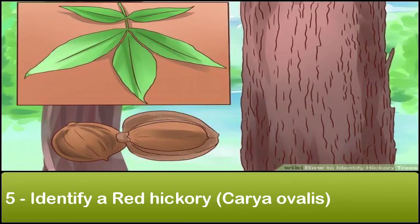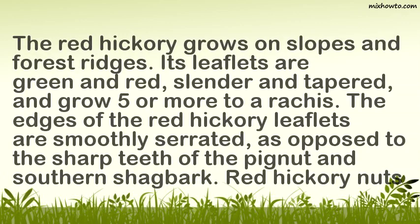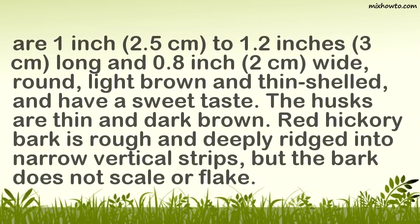Step 5: Identify a Red Hickory (Carya ovalis). The red hickory grows on slopes and forest ridges. Its leaflets are green and red, slender and tapered, and grow 5 or more to a rachis. The edges of the red hickory leaflets are smoothly serrated, as opposed to the sharp teeth of the pignut and southern shagbark. Red hickory nuts are 1 inch (2.5 cm) to 1.2 inches (3 cm) long and 0.8 inch (2 cm) wide, round, light brown and thin-shelled, with a sweet taste. The husks are thin and dark brown. Red hickory bark is rough and deeply ridged into narrow vertical strips, but does not scale or flake.